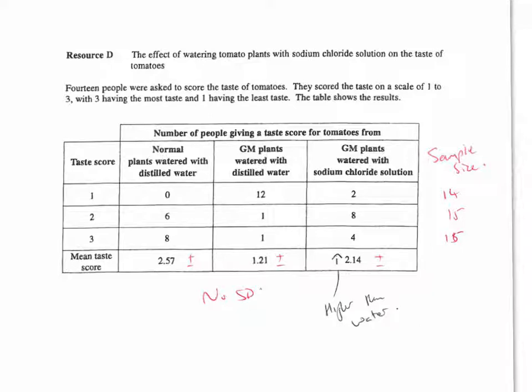But perhaps more importantly is the taste. So what we've got here is data where we can see that if you just compare the two GM plants with each other, when watered with salt solution, it improves the taste. However, it's actually lower than the normal taste score. Also, if you notice, if you add up how many different types of tomato we use, there's 14 tomatoes used here, 14 tomatoes, 14 tomatoes. So that's a small sample size. It's not representative.